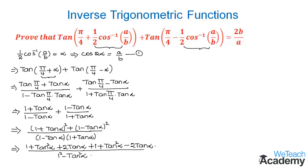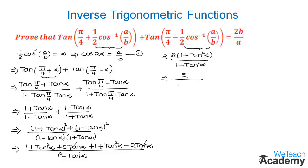In the numerator, the 2 tan α terms have opposite signs, so we cancel them. Adding the remaining similar terms and taking 2 as a common factor gives 2(1 + tan²α) in the numerator. This can be rewritten as 2 divided by (1 − tan²α)/(1 + tan²α).